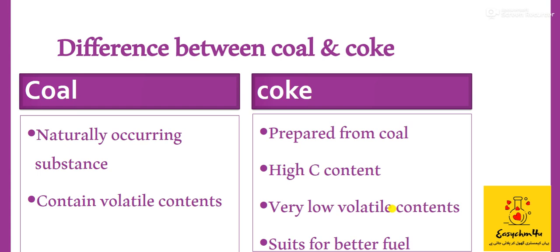Difference between coal and coke: Coal is the naturally occurring substance and contains a large number of volatile elements. But when we process this coal, we get coke, which is prepared from coal with high carbon contents and very low volatile contents. After processing, the volatile contents are removed — that's why coke has very low volatile content and is suitable as a better fuel.